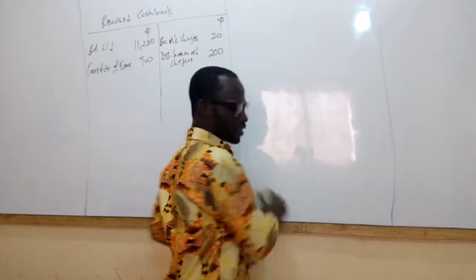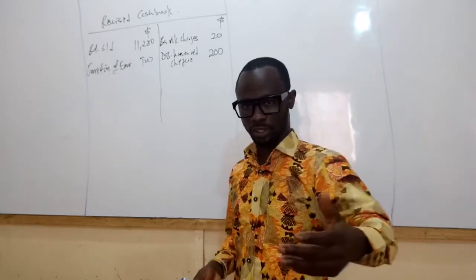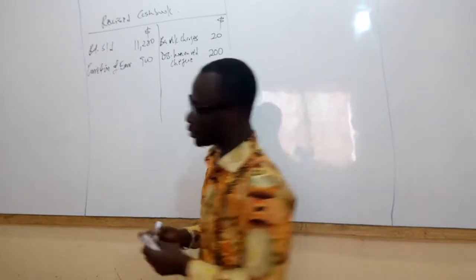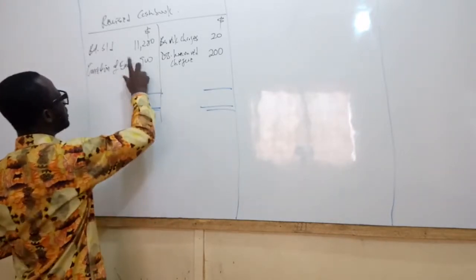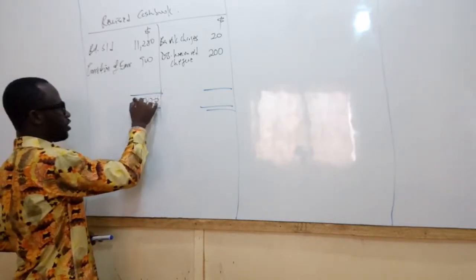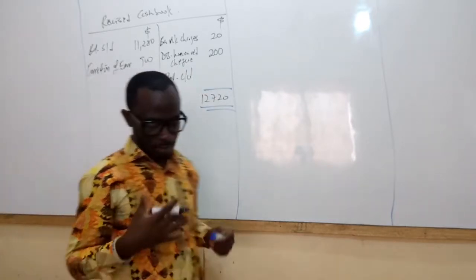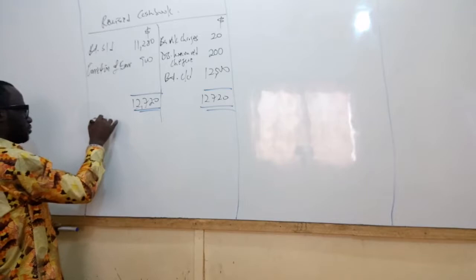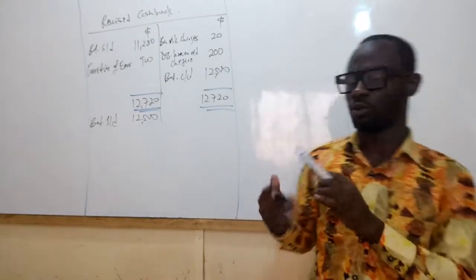Lodgements of $4,000 had not yet appeared on the bank statement. Lodgements are the same as deposits. That is all for the adjusted cash book, so we balance it out. The debit side is bigger; when we add it up it gives $12,720. Balance carried down is $12,500. So, balance brought down: $12,500. That is the revised cash book we've prepared.